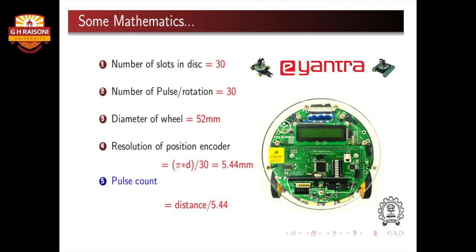Always remember while writing the program: the left encoder is connected to INT4 and the right encoder to INT5. There are certain specifications to remember regarding the encoder disc for mathematical calculations. The number of slots in the disc is 30, the number of pulses per rotation is 30, and the diameter of the wheel is 52 mm. The resolution of the position encoder is calculated as π × d / 30 = 5.44 mm, and the formula for pulse count is derived as distance divided by 5.44.